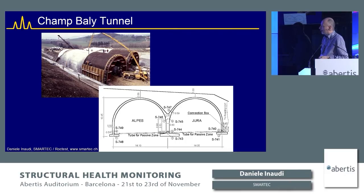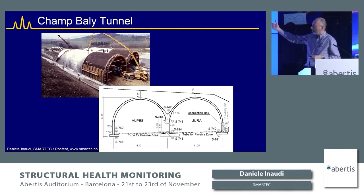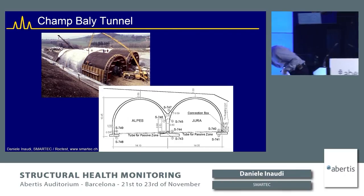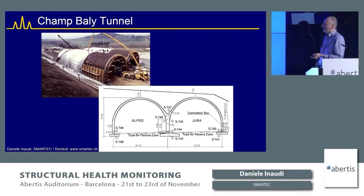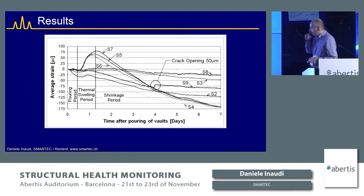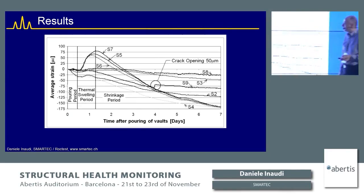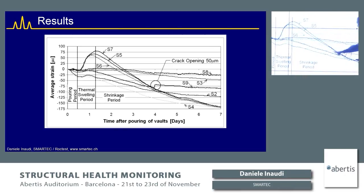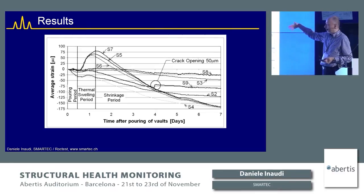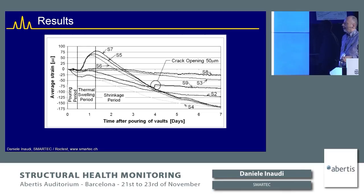A cut-and-cover tunnel example: an early use of high-performance concrete in Switzerland, comparing a section with conventional concrete against one with high-performance concrete. Sensors were installed at multiple locations across the cross-section to monitor short-term and long-term behavior. Measurements detected cracks forming: the thermal expansion phase is visible, then shortening, and sudden jumps indicate cracks — detectable even before they can be seen visually while the formwork is still on.